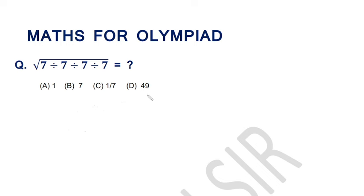and 49. Let's start. The square root of 7 divide 7 divide 7 divide 7. Now the question arises: from which side do we start - from left to right or right to left? We will start from left to